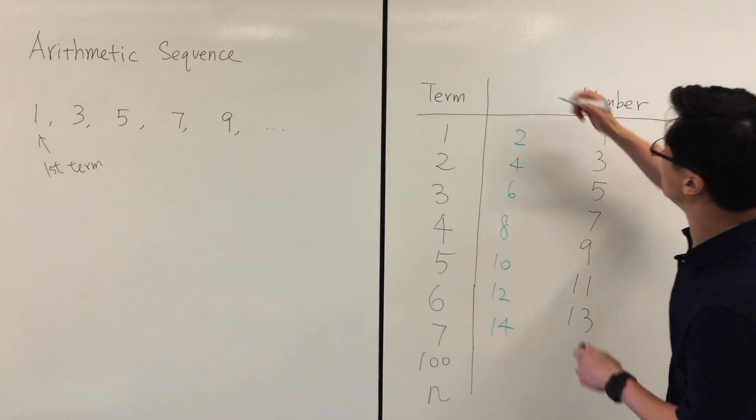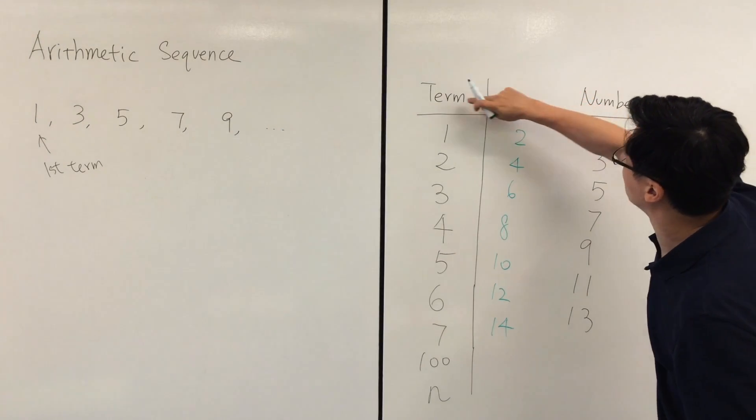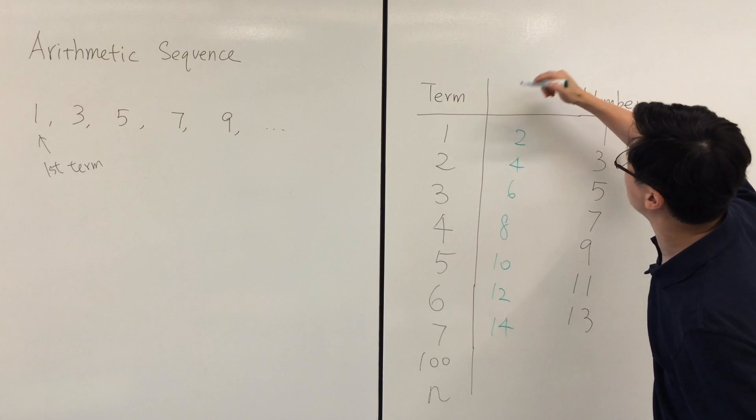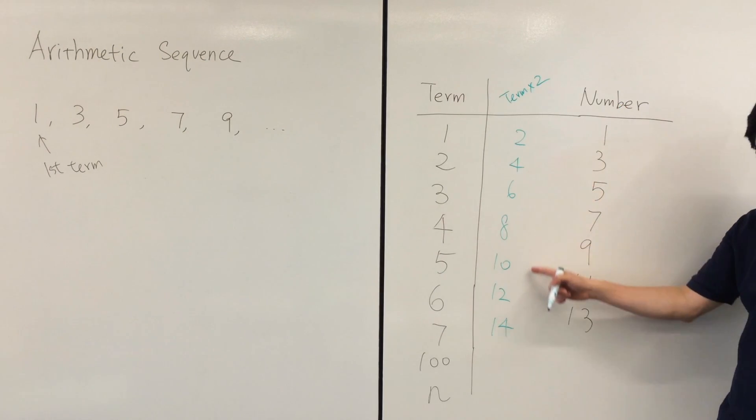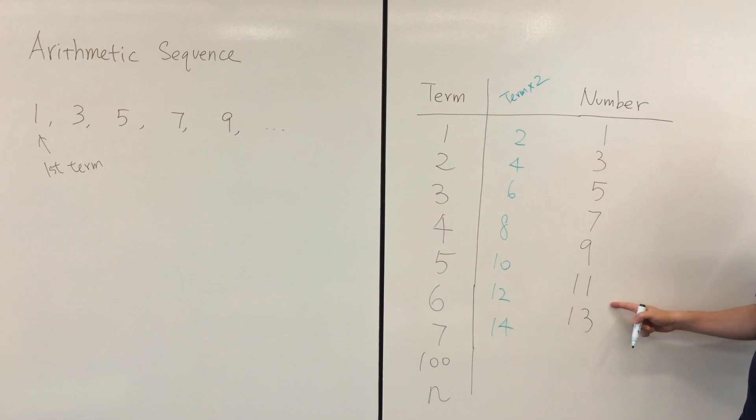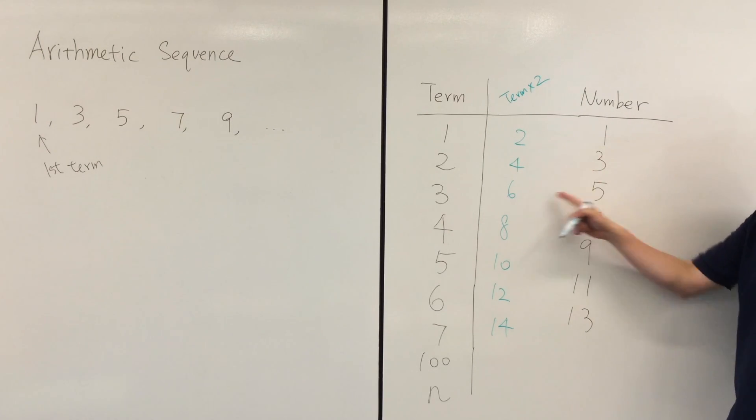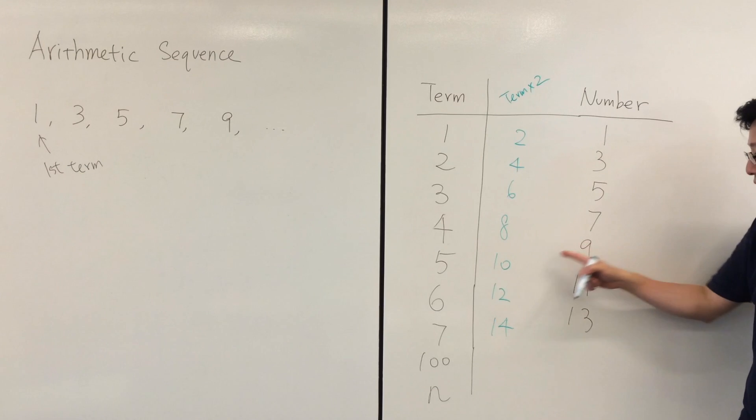And now this column is the number of terms multiplied by 2. And now can you find the relationship between the green numbers and the column on the right hand side? 2 and 1, 4 and 3, 6 and 5, 8 and 7, 10 and 9, 12 and 11, 14 and 13.